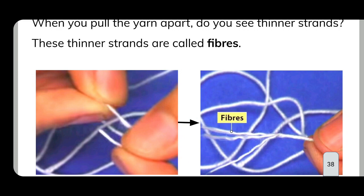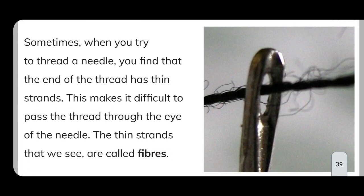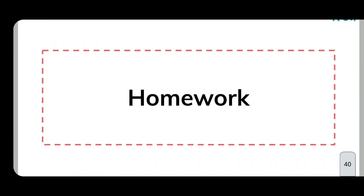When you pull the yarn apart, you see thinner strands — these thinner strands are called fibers. Sometimes when you try to thread a needle, the end of the thread has thin strands making it hard to pass through the eye of the needle. Those thin strands are called fibers.